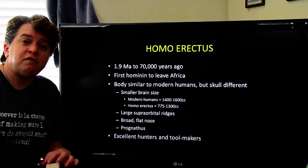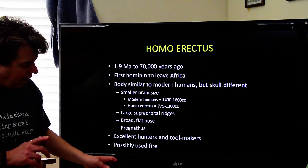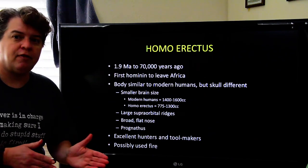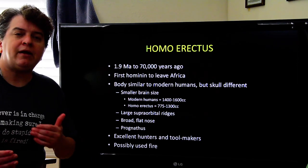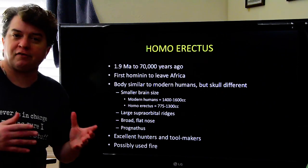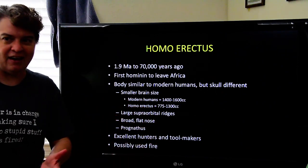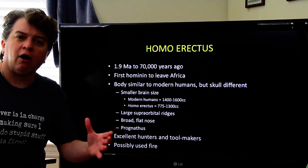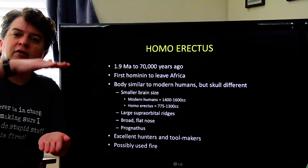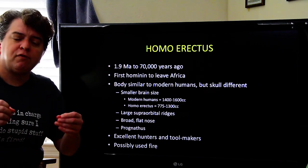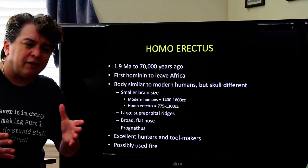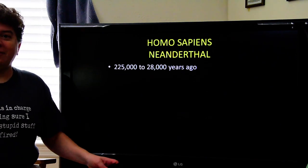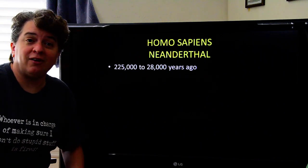Homo erectus were excellent hunters and tool makers, and they possibly used fire. In some locations where we find Homo erectus there is evidence of fire, but we can't determine if it was accidental — such as encountering a wildfire — or intentional. Repeated intentional fire use typically produces a hearth with numerous fires layered on top of each other, and we don't see that clearly, though there is some evidence fire was sometimes present. We'll continue with Neanderthals in volume two.